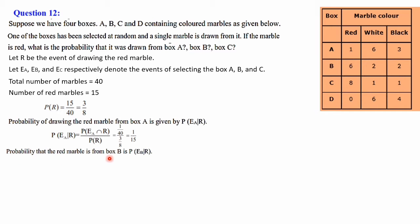Next, the probability that the red marble is from box B is P(Eb|R) — the probability of choosing a red marble from box B given it is red. Using the formula, P(Eb∩R) / P(R): box B has 6 red balls, so P(Eb∩R) = 6/40. Dividing by P(R) = 3/8 gives 6/40 × 8/3, which simplifies to 2/5.